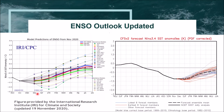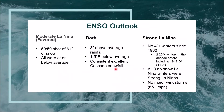Starting with the ENSO outlook: ENSO refers to average temperatures in the tropical Pacific. We are currently about 1.3 degrees Celsius below average, meaning we are in a moderate La Niña. The Climate Prediction Center ensembles show we will probably stay in a moderate La Niña for the duration of winter, though some ensembles show a strong La Niña. The CFS ensembles all show moderate La Niña for the remainder of winter. Snow lovers should rejoice — there's a 50/50 shot we receive six inches or more of snow.